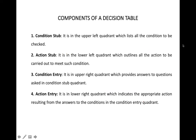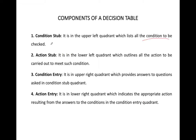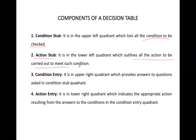The Condition Stub lists all the conditions to be checked. The Action Stub outlines all the actions to be carried out to meet those conditions. So in the Condition Stub we have all the conditions, and in the Action Stub we have all the actions that need to be performed to meet those conditions.